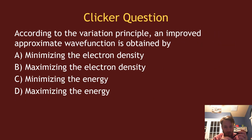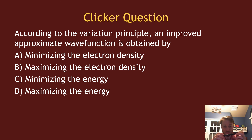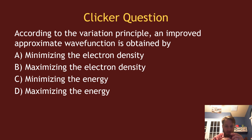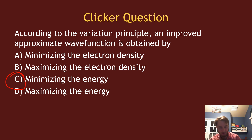Clicker question to wrap this up: According to the variation principle, an improved approximate wave function is obtained by: minimizing the electron density, maximizing the electron density, minimizing the energy, or maximizing the energy? The answer is C — minimizing the energy.